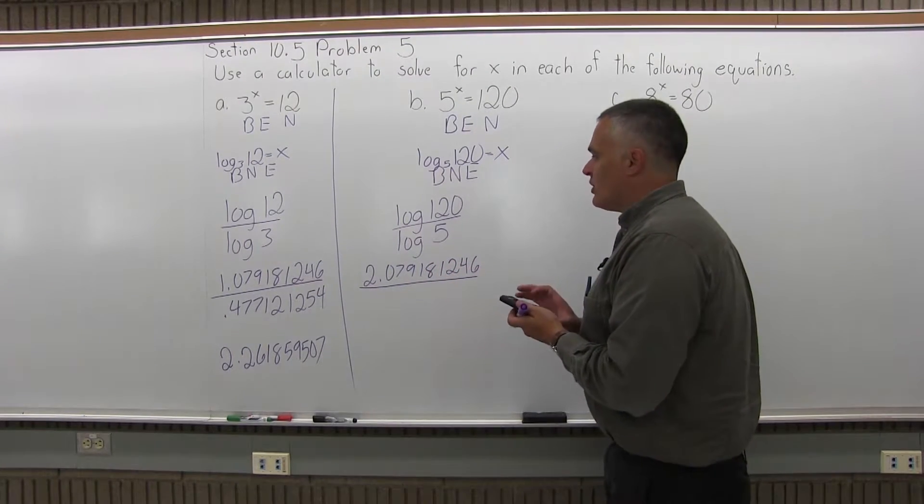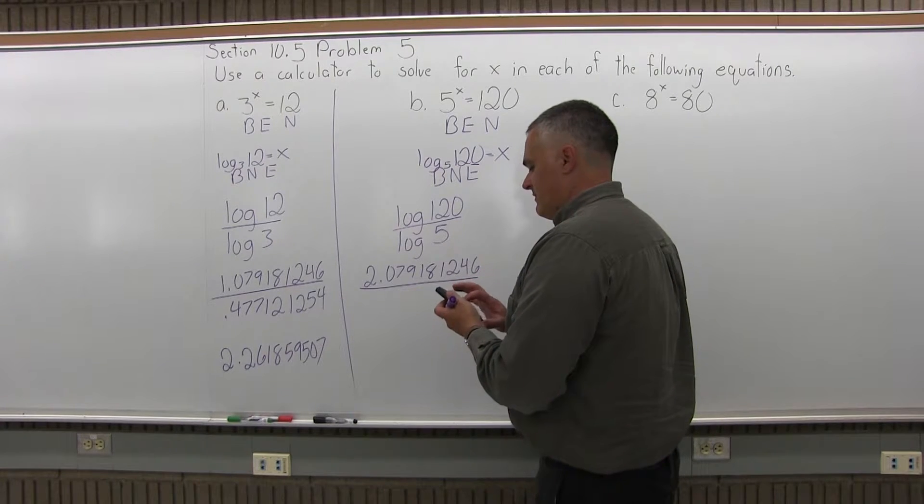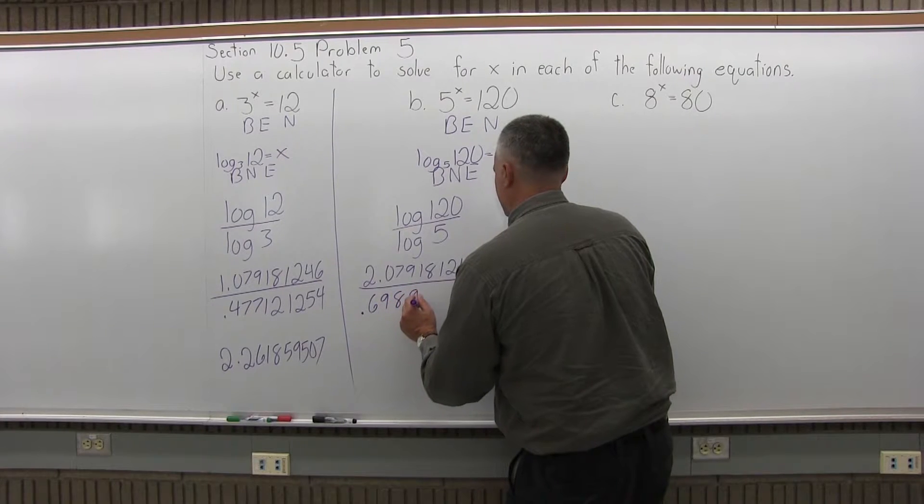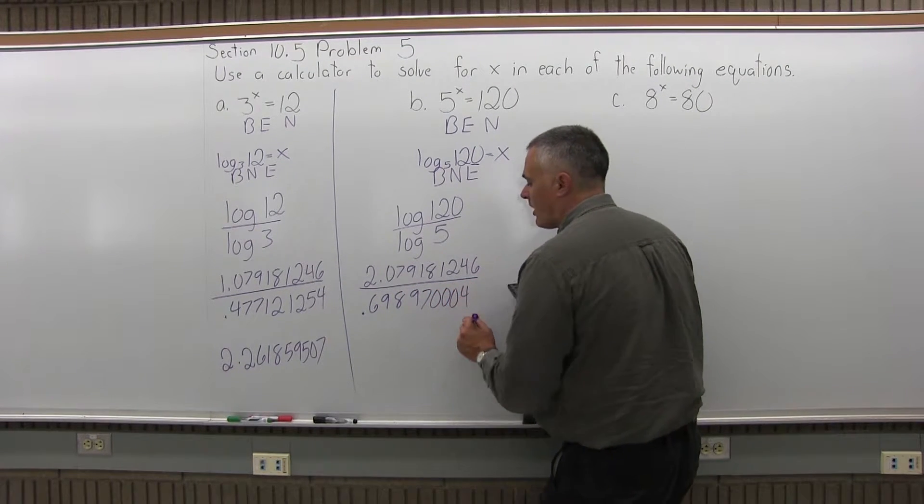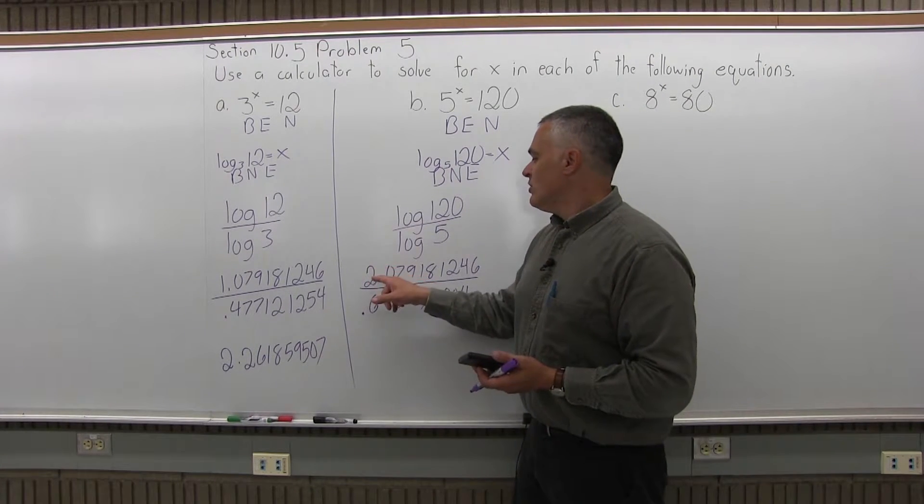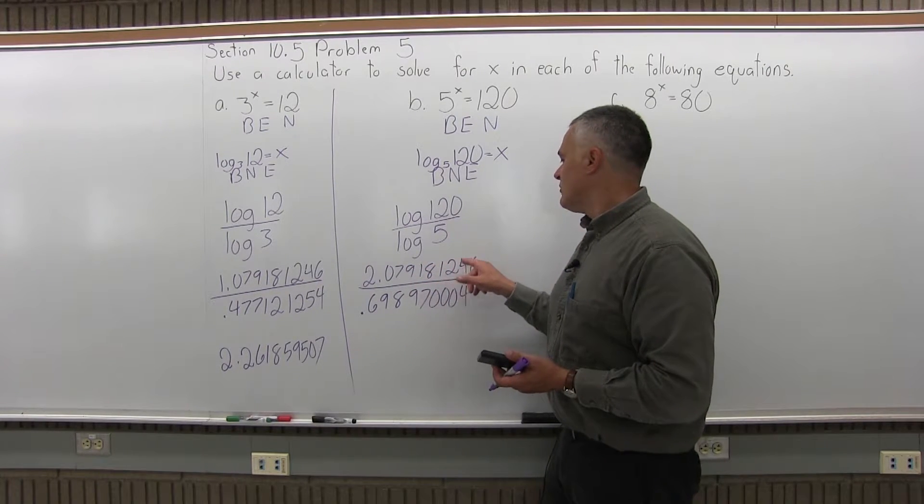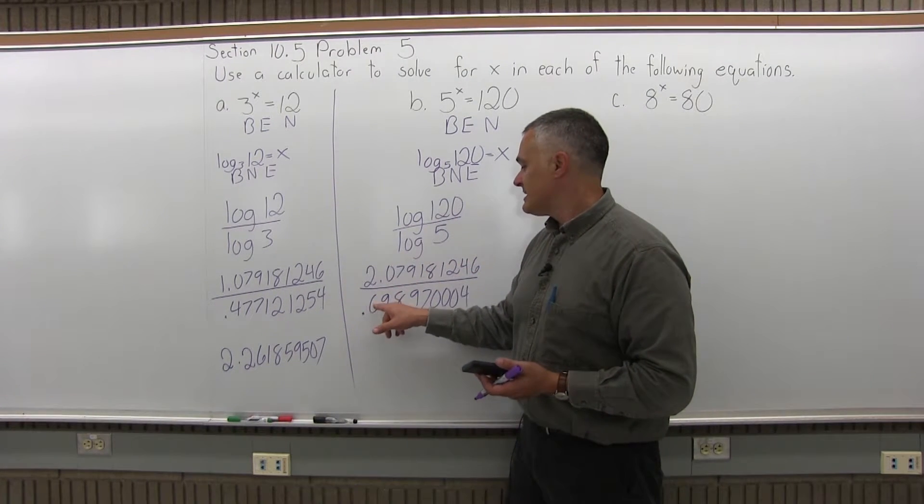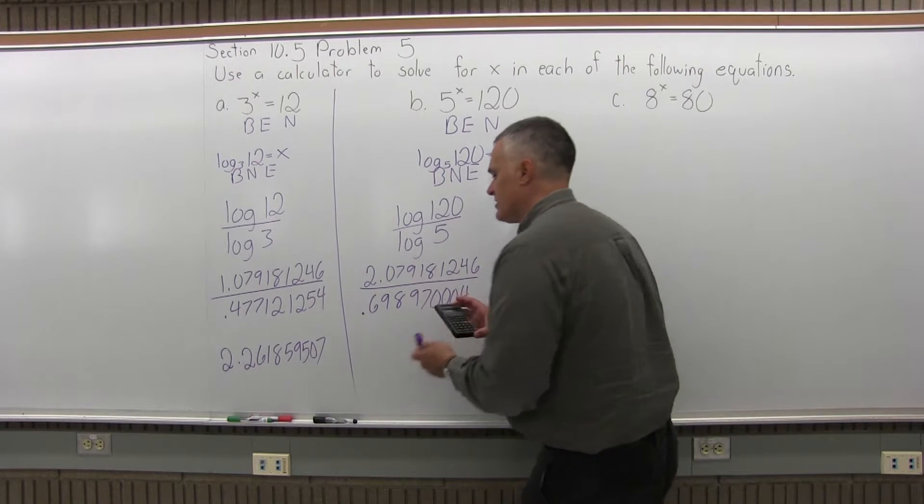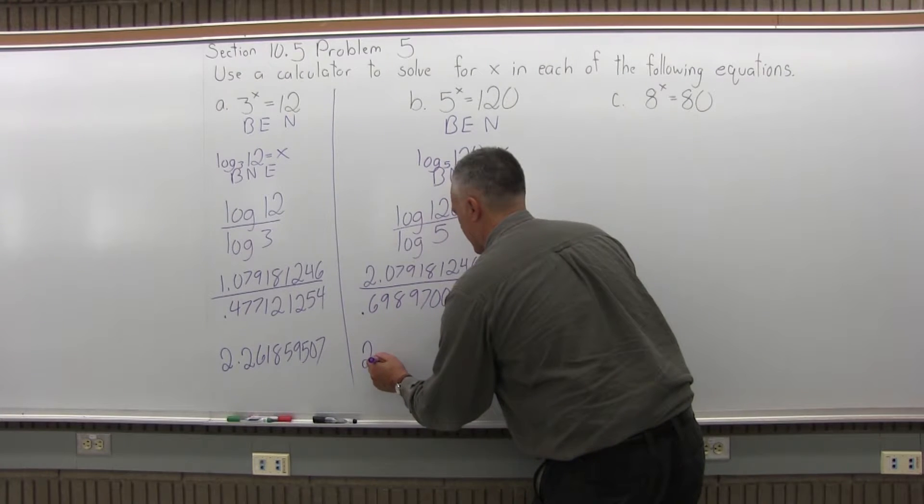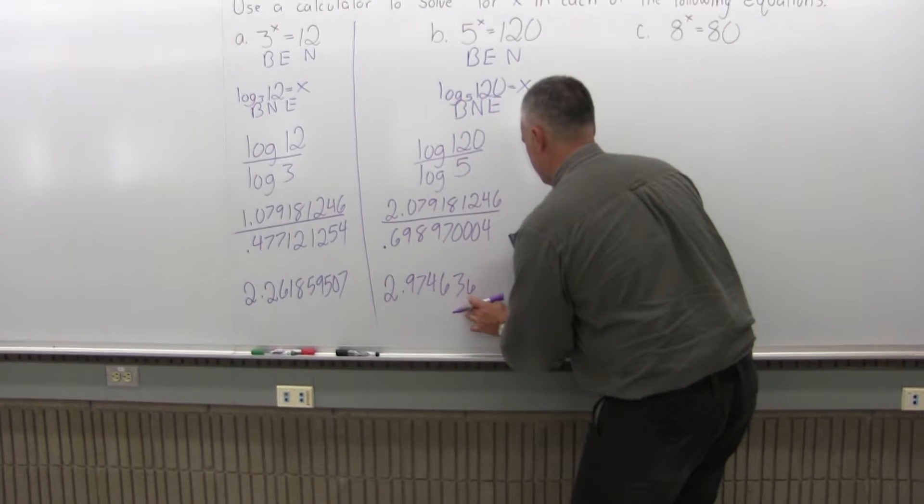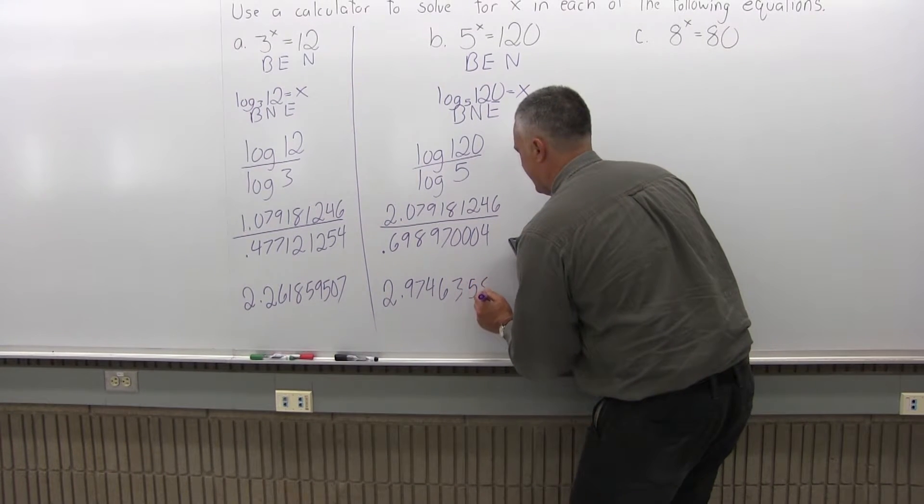And in the denominator, the common log of 5 is 0.698970004. Now with my calculator, I'll divide those two values. I'm going to do 2.079181246 divided by 0.698970004. And the answer I get is 2.974635869.